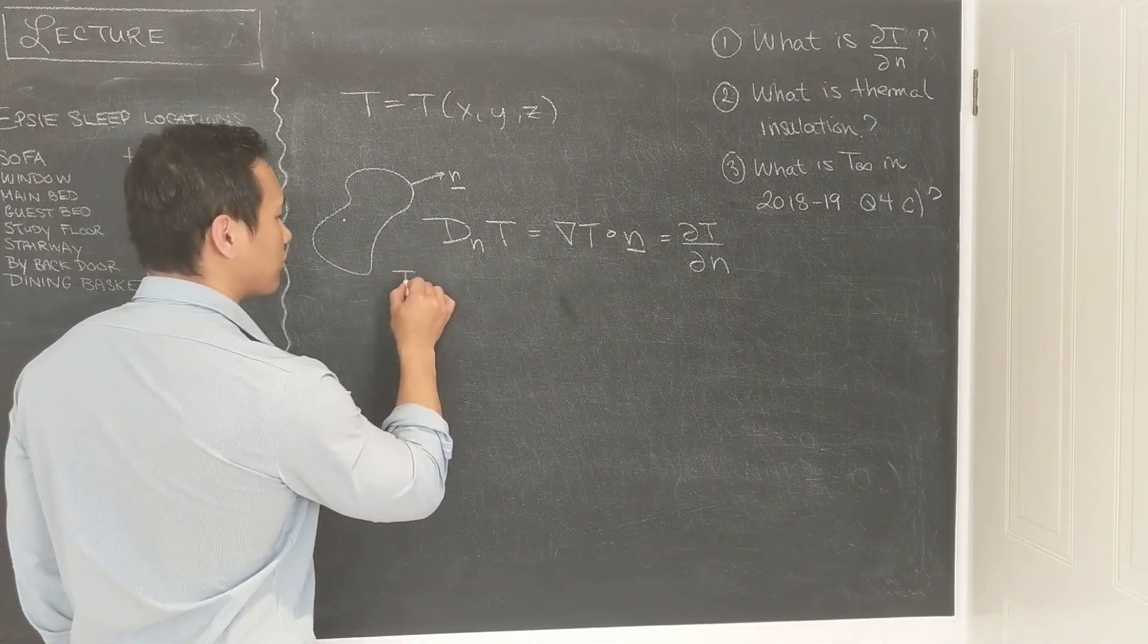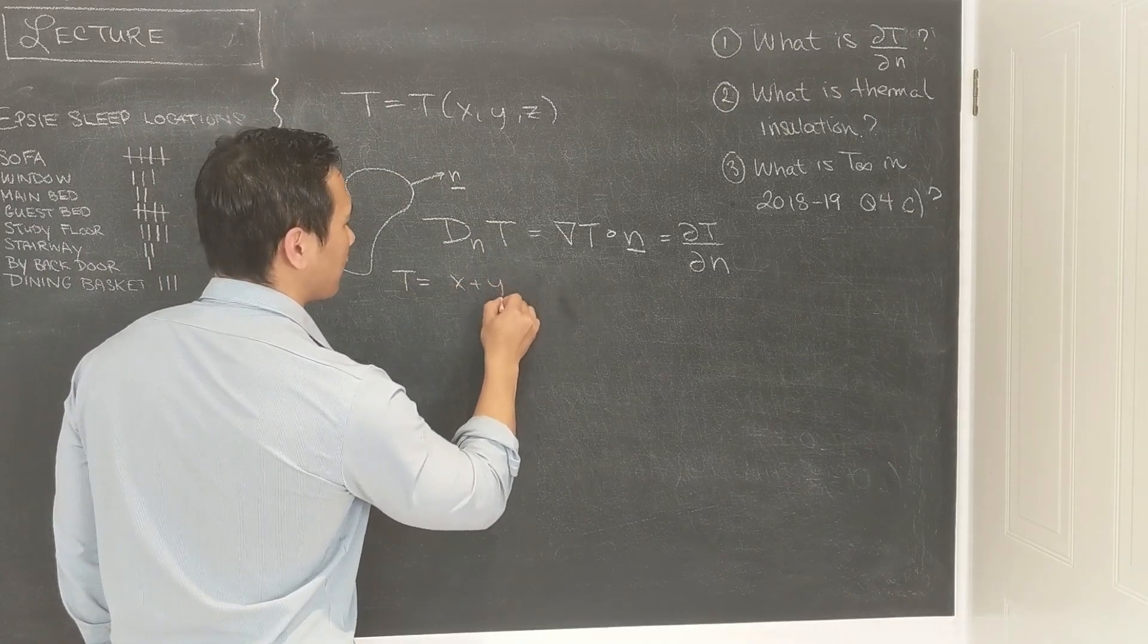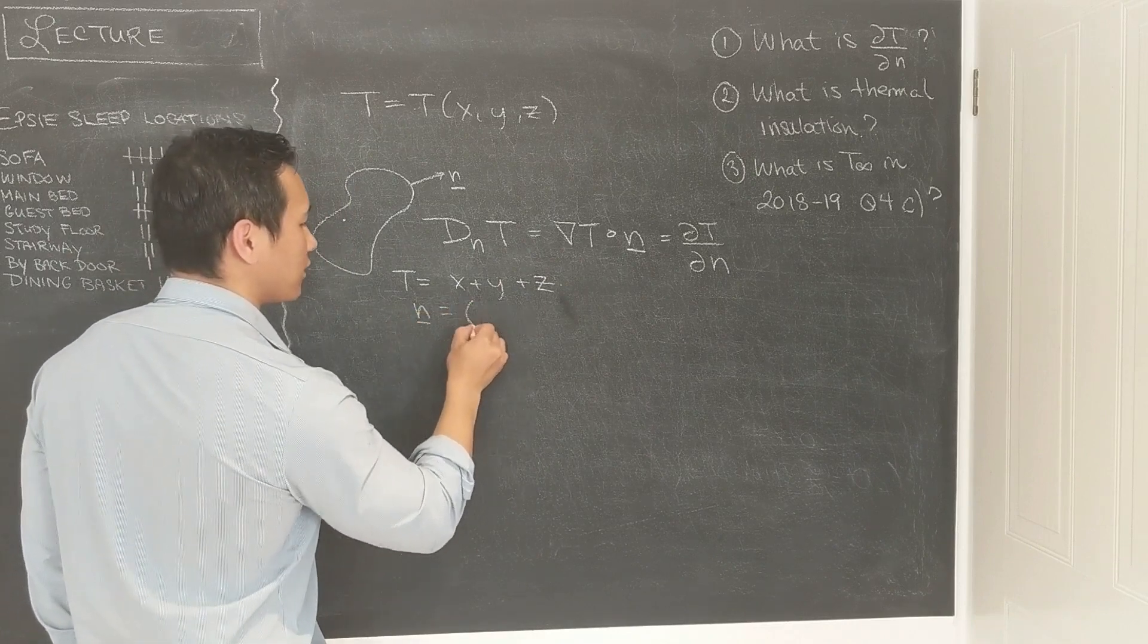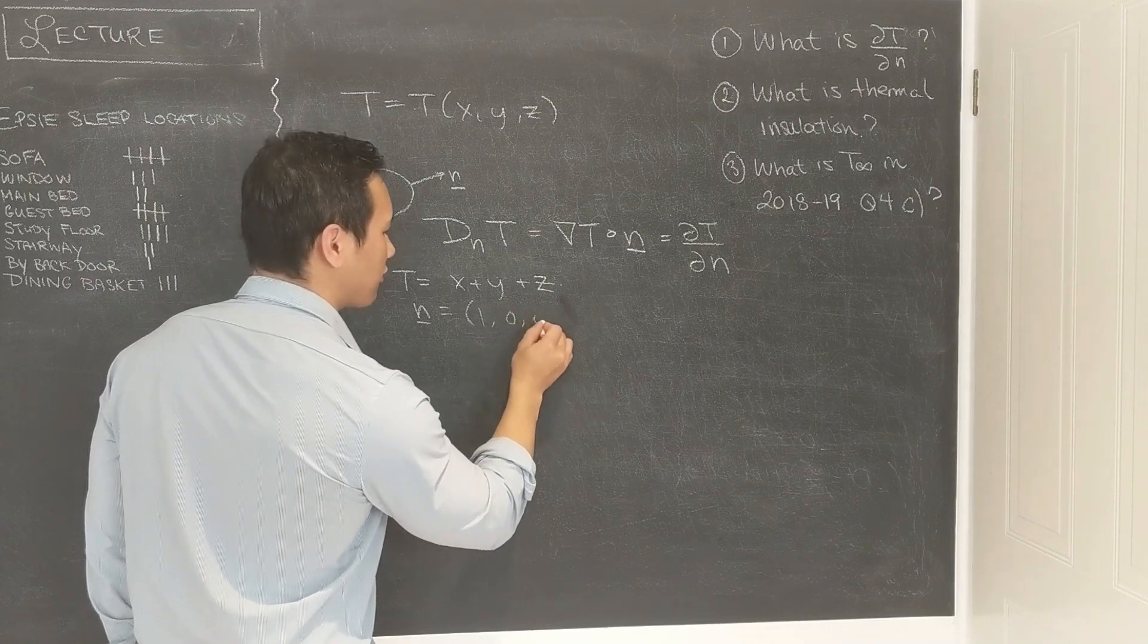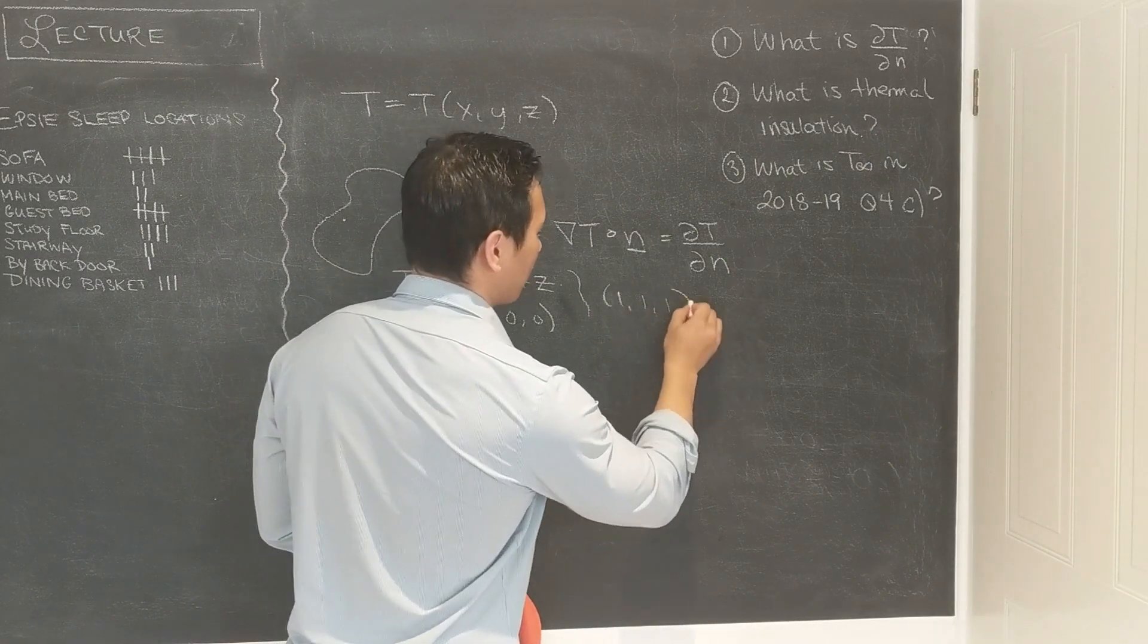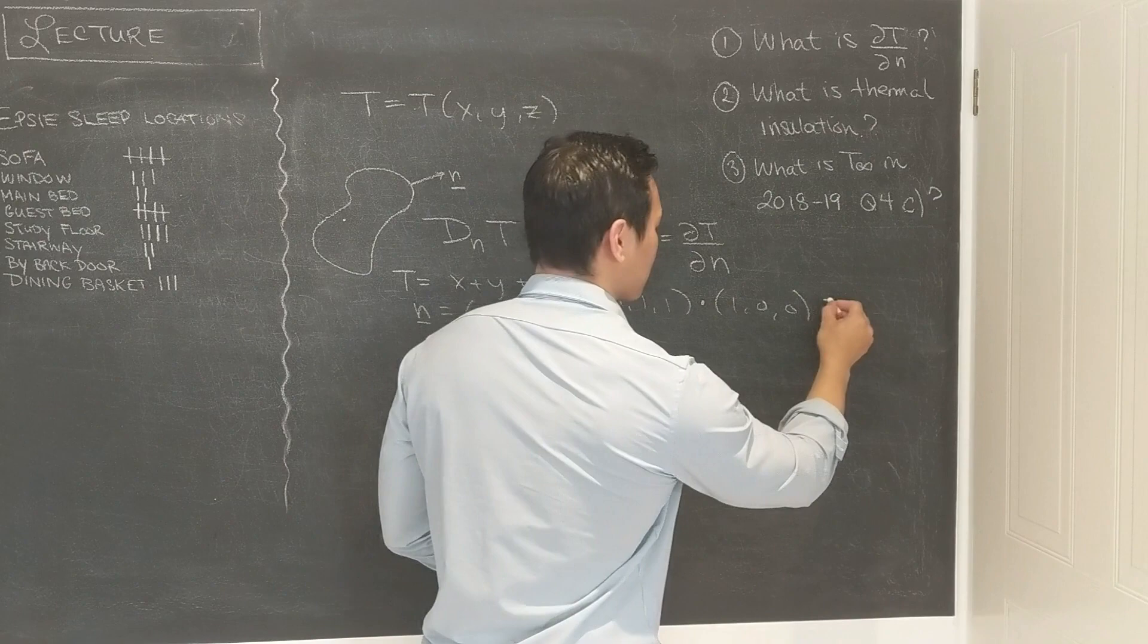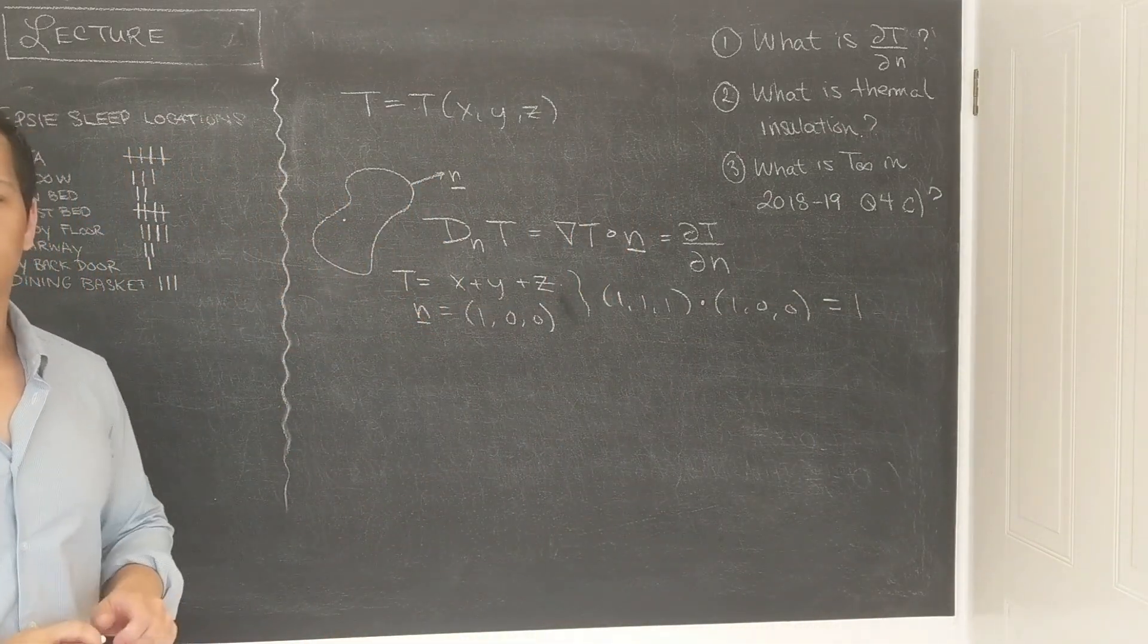So just as a simple example, suppose that my t is say x plus y plus z, and then let's say I want to find the rate of change of this temperature in the direction 1, 0, 0. I just take the gradient of t, so that's 1, 1, 1, and then I dot that with 1, 0, 0 equals 1. So this is the rate of change of t in the direction n.